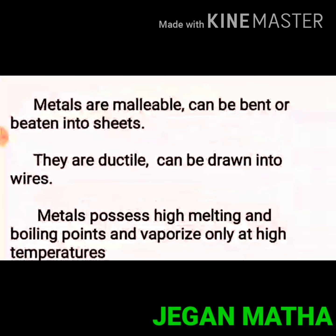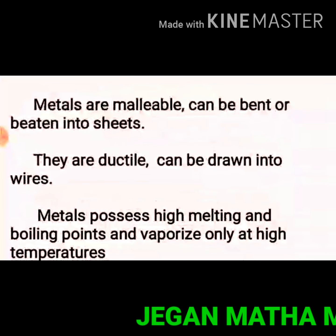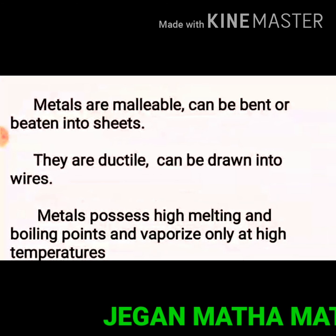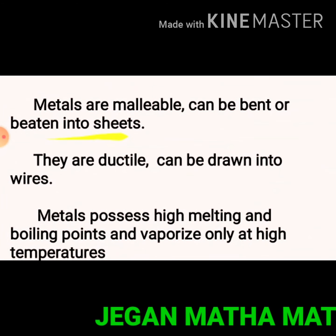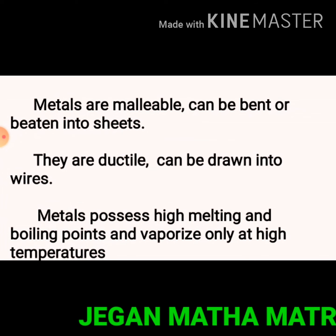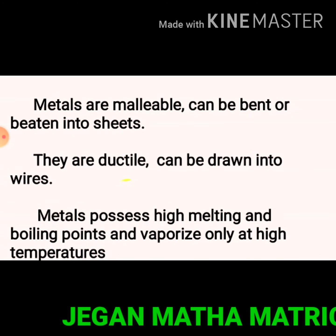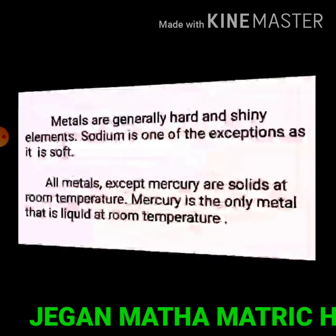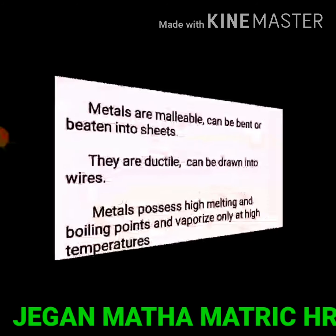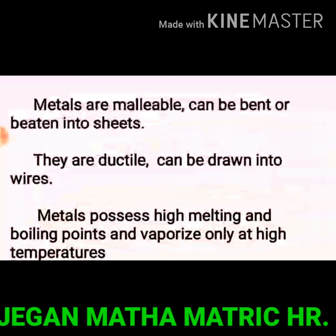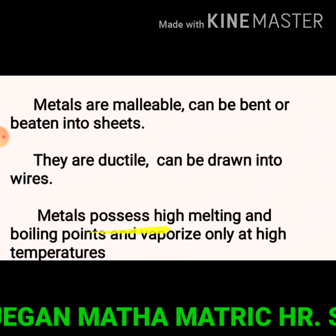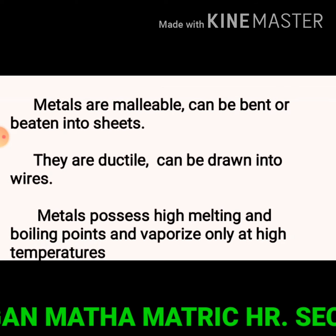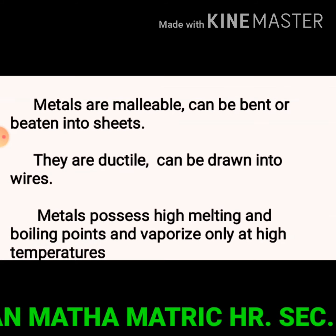Metals are malleable, meaning they can be bent or beaten into sheets. They are also ductile, meaning metals can be drawn into wires. Metals possess high melting and boiling points and vaporize only at high temperatures.